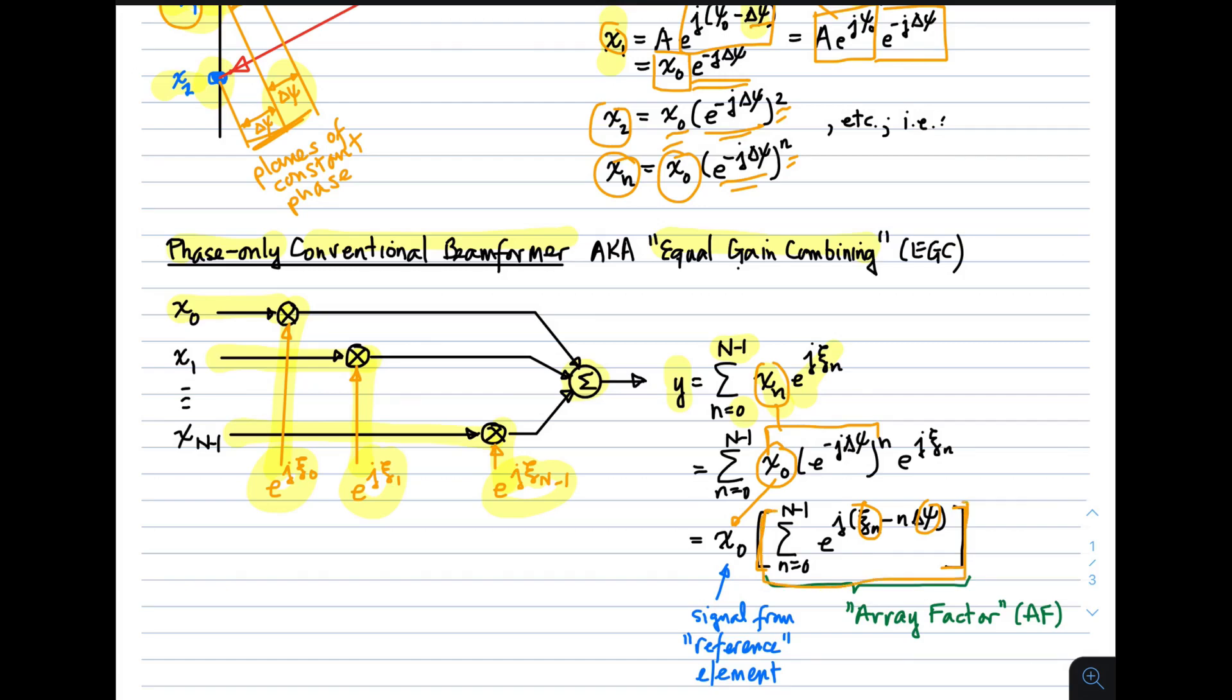This expression here, this sum, which again depends only on geometry and the phase shifts that we apply, and not at all on the signal, is called the array factor, or AF is the abbreviation. And it really is the description of the system—the array is a system. So here's the input, and we multiply it by some system, which we'll refer to as the array factor, and we get the beamformer output.